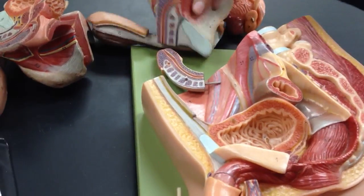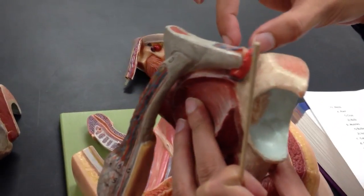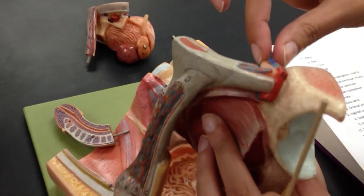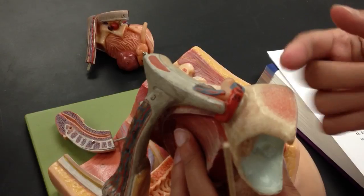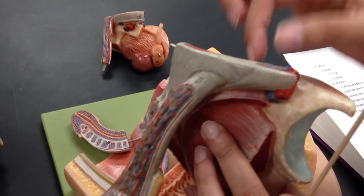The inguinal canal is right here. That's where the ductus vas deferens and the testicular artery and vein are separated, and then they come over here and form the spermatic cord through the inguinal canal.